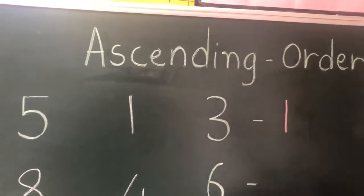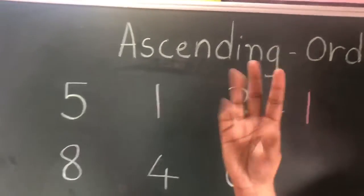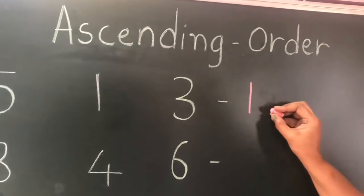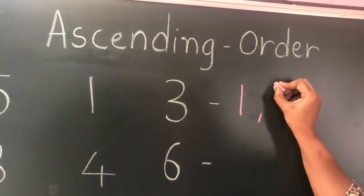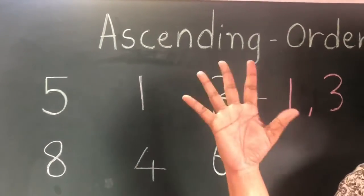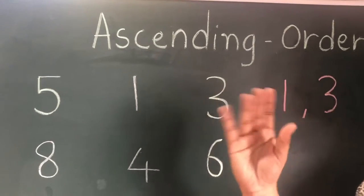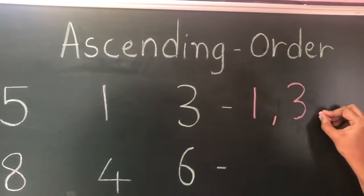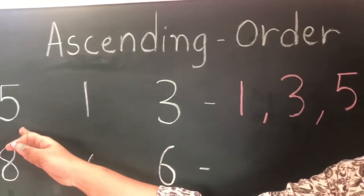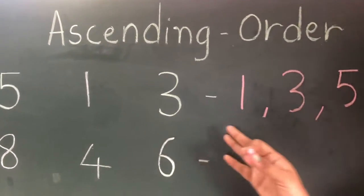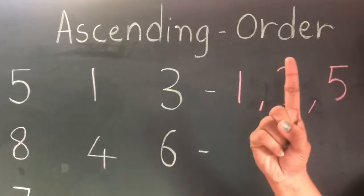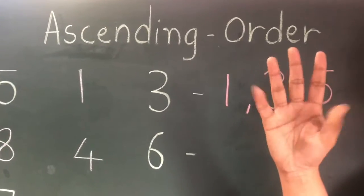After one, is five the smallest or is three the smallest? Three is the smallest, so I'm writing three here. After that, five is the greatest number, the biggest. So I write five. From these three numbers I've arranged them in ascending order: one, three, and five.